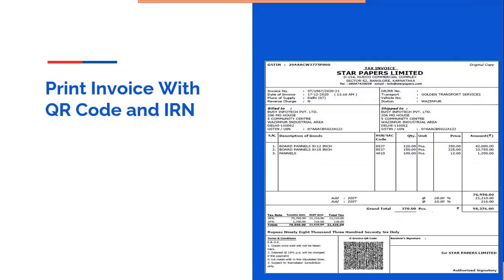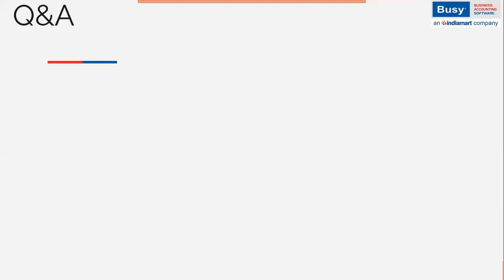In the tax invoice, you can display the e-invoice QR code and IRN detail including IRN number and IRN date. In the standard invoice format, there is an option to enable IRN date and IRN detail — if enabled, it will automatically appear on your tax invoice screen. Busy provides the e-invoice printout directly without needing to go to the portal.